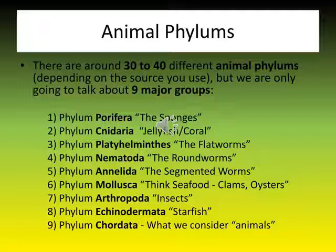The nine major phylums are: Phylum Porifera (sponges), Phylum Cnidaria (jellyfish or coral), Phylum Platyhelminthes (flatworms), Phylum Nematoda (roundworms), Phylum Annelida (segmented worms), Phylum Mollusca (clams and oysters — the seafood we eat), Phylum Arthropoda (insects with jointed legs), Phylum Echinodermata (starfish), and Phylum Chordata, which includes vertebrates like fish, mammals, and amphibians.